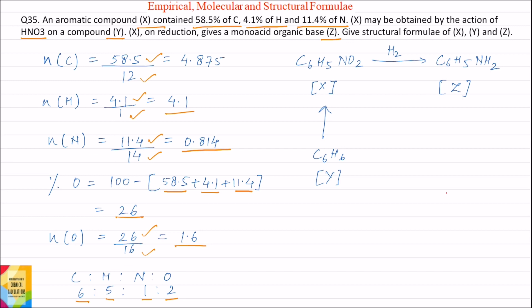Now according to the question, the given compound is aromatic compound. Aromatic compound means it contains C6H5 group. C6H5 group requires 6 carbons and 5 hydrogen.